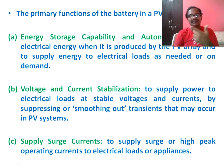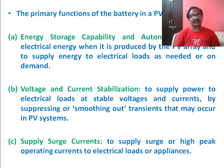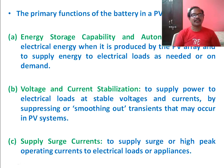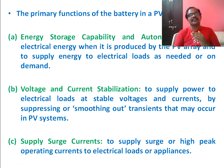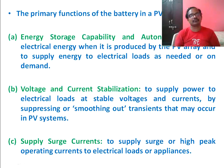The second function is voltage and current stabilization — to supply power to electrical loads at stable voltages and currents by suppressing or smoothening out transitions that may otherwise occur in the PV system. The third function is to supply surge currents — that is, to supply surge or peak operating currents to electrical loads or appliances. For example, to operate an induction motor, starting currents are very high, and those higher currents will be taken from the battery.